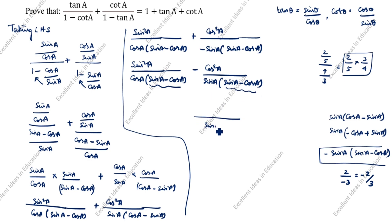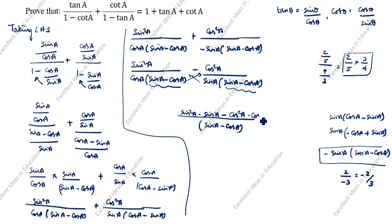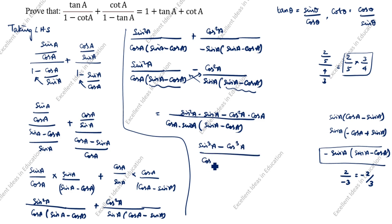You see here sin A minus cos A, and here also sin A minus cos A. We will take it outside. So sin A minus cos A is the common factor. We get: sin squared A into sin A minus cos squared A into cos A, all divided by cos A into sin A open bracket sin A minus cos A. Sin squared A into sin A gives sin cubed A, minus cos squared A into cos A gives cos cubed A.